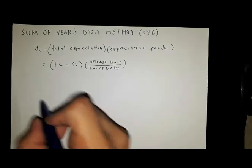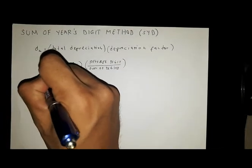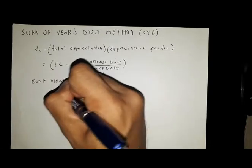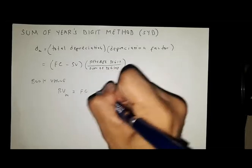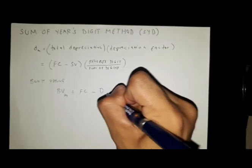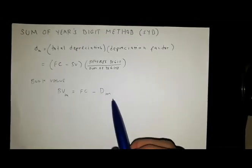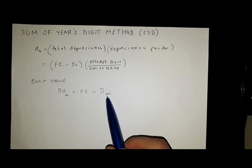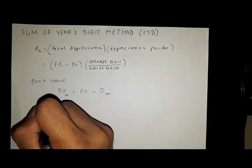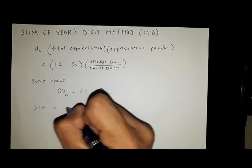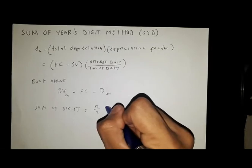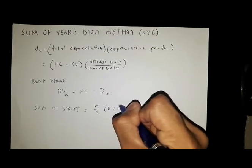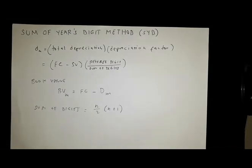Other formulas include: Book Value (BV) equals First Cost minus the depreciation after m years. We also have the sum of digits given by the formula n over 2 times (n plus 1). Without further ado, let's solve a sample problem.